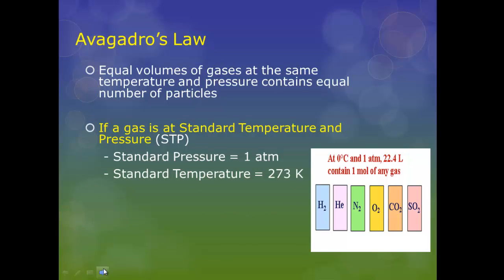If a gas is at standard temperature and pressure, and we define that as standard pressure is one atmosphere, and standard temperature is 273 degrees Kelvin, one mole of gas particles at STP occupies a volume of 22.4 liters. All these different gases: hydrogen, helium, nitrogen, oxygen, carbon dioxide, sulfur dioxide, all different sized atoms that make up these molecules, all at standard temperature and pressure, all have 22.4 liters for a mole of gas in that container or space.